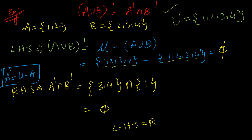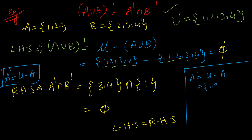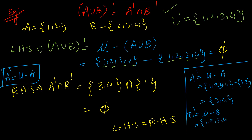A complement = U minus A = {1,2,3,4} minus {1,2} = {3,4}. B complement = U minus B = {1,2,3,4} minus {2,3,4} = {1}. Intersection of {3,4} and {1} gives empty set since there is no common element. So LHS = RHS = empty set, and the first De Morgan's law is verified.